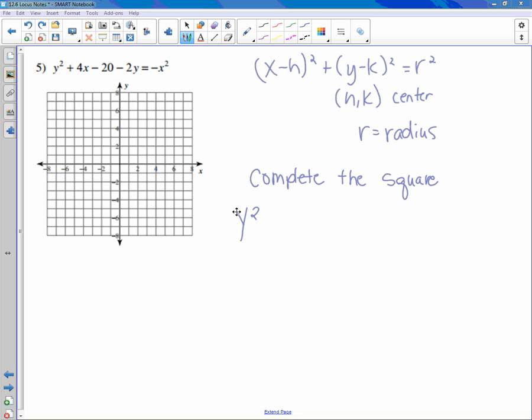We're going to rewrite this equation right here: y² + 4x - 20 - 2y = -x². Now the first step is that I'm going to get variables on one side and constants on the other, and I want to get my variables in descending order.